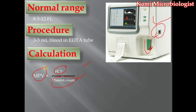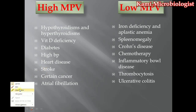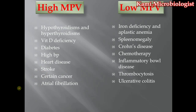There are some conditions and diseases in which the mean platelet volume gets high. First, we have hyperthyroidism and hypothyroidism. The thyroid gland secretes hormones called T3 and T4, which mainly maintain the platelet volume in the blood. If there is a disturbance in T3 and T4 due to hyperthyroidism or hypothyroidism, the platelet volume will not be maintained and will get high. Vitamin D deficiency, which is important for the bone marrow, can also increase the mean platelet volume.